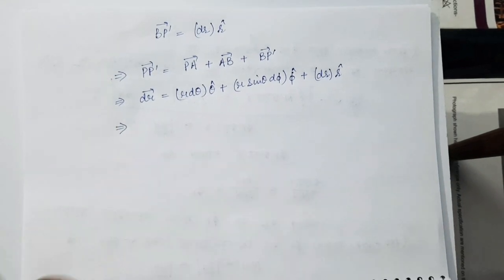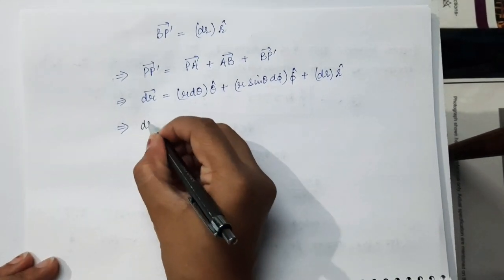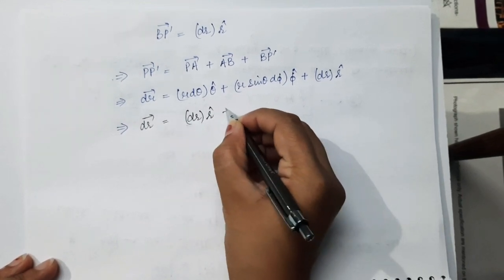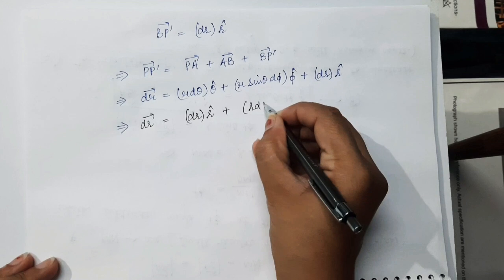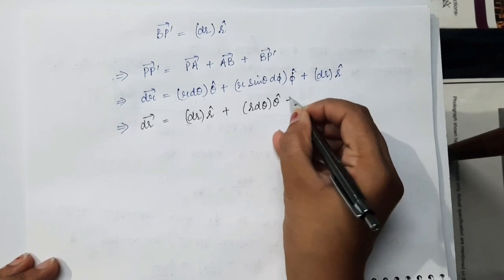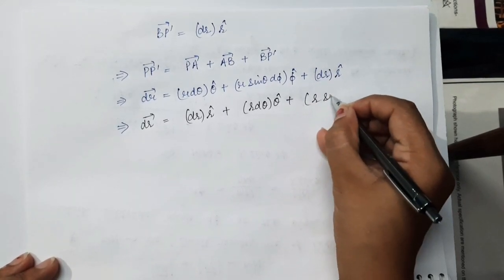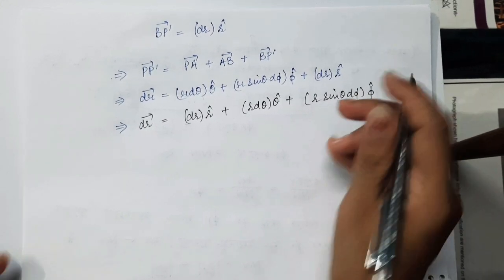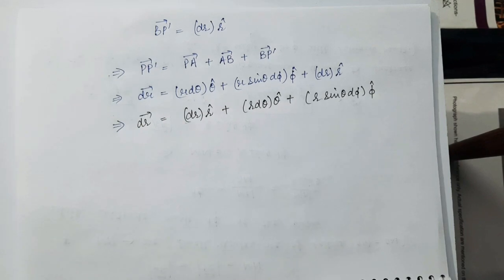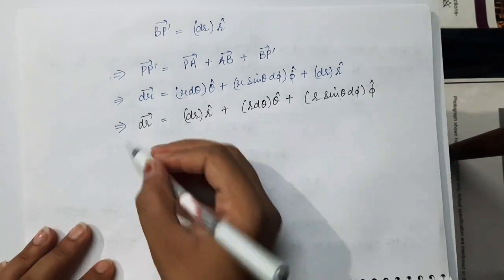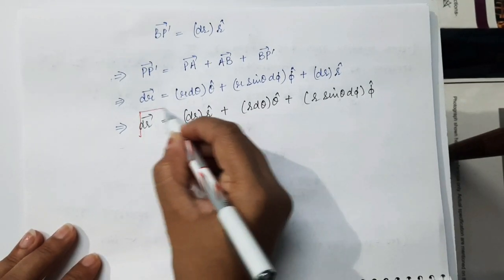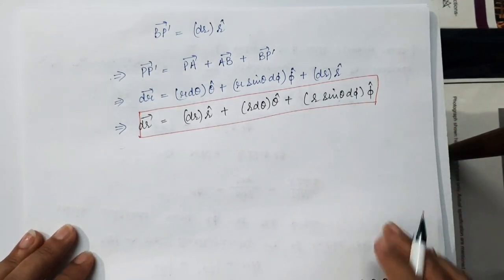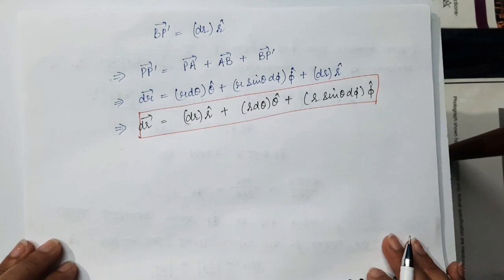Now writing it in order: first the R cap term — DR R cap — second term will be RDθ θ cap, and the next term will be R sinθ Dφ φ cap. So this is the expression of displacement from point P to P', when a particle is moving in space, in terms of spherical polar coordinates R cap, theta cap, and phi cap.